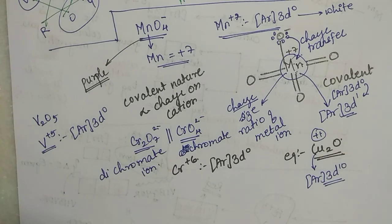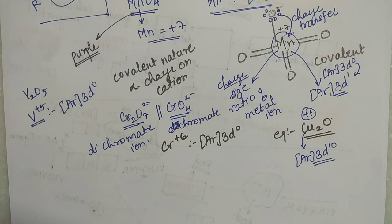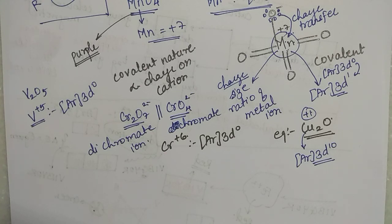So I hope you have understood the charge transfer concept. Even though you have d⁰ or d¹⁰ configurations, these compounds become colored due to charge transfer — though charge transfer only occurs in selective cases. The color concept of transition elements is now clear, and that is why transition element compounds have prominent, highly saturated colors. The other properties — magnetic properties and catalytic properties — are relatively simple, and we will cover them in the next section.